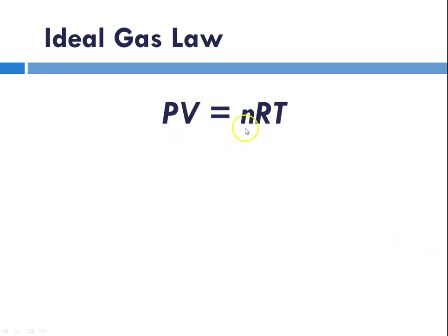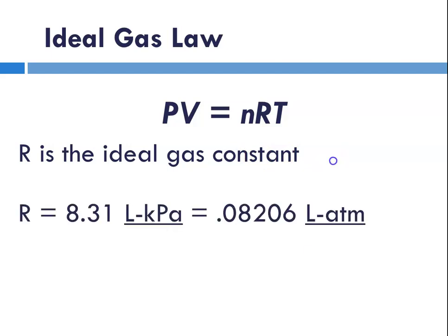So the ideal gas law is PV equals nRT, and R is this so-called ideal gas constant. And I'm going to give it to you in two forms. I'm going to give it to you in liters per kilopascal per mole degree K, or liter atmospheres per mole degree K. And for most of the problems that we will solve, we will use the 0.08206 liter atmospheres per mole Kelvin.